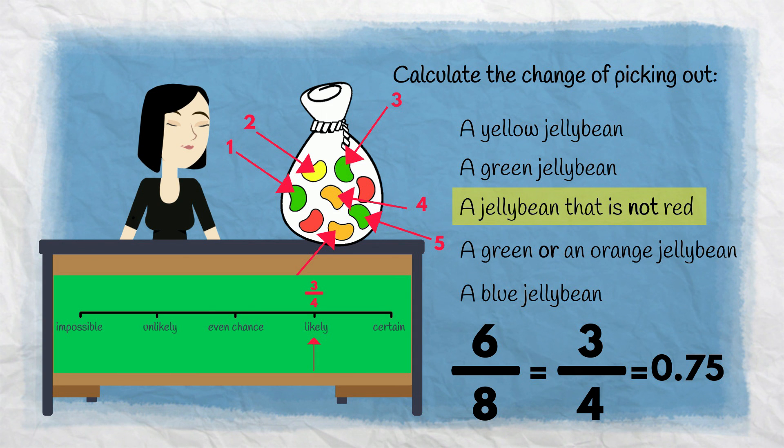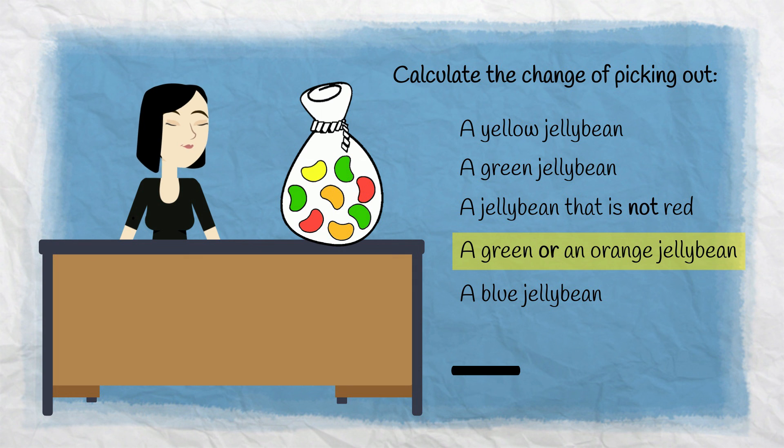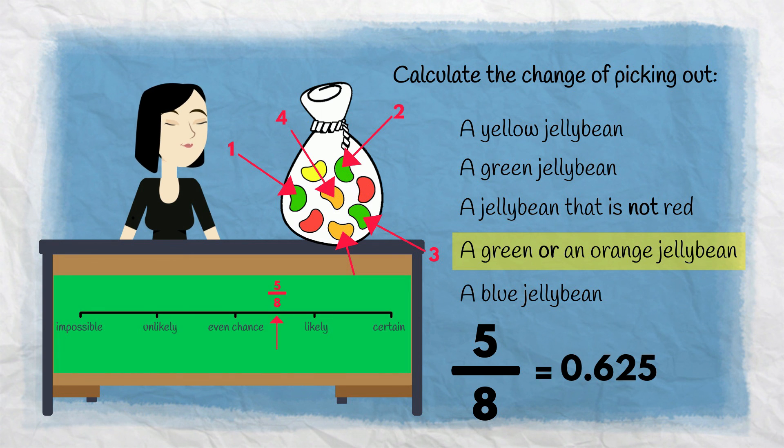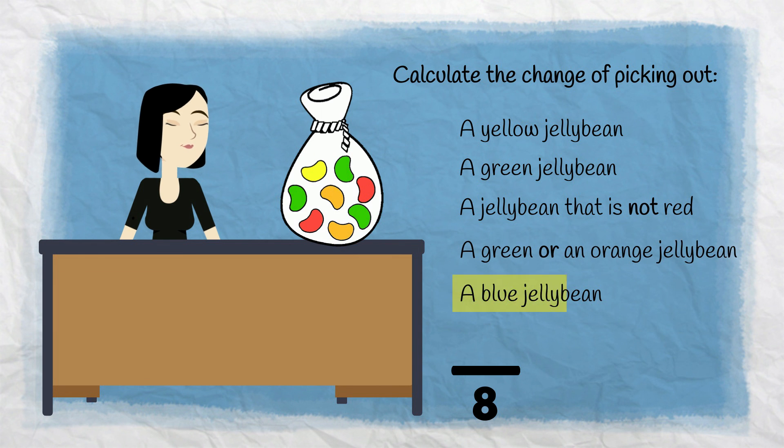The chance of picking a green or an orange jelly bean is 5 in 8. The event is achieved if any of these 5 jelly beans are picked. 5/8 as a decimal is 0.625. The probability of picking out a blue jelly bean is 0. It's impossible.